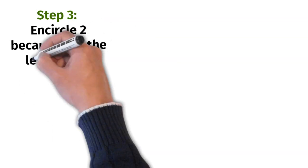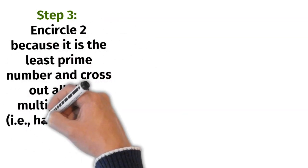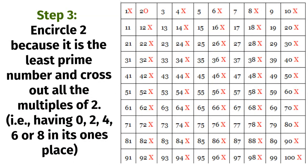Step 3: encircle 2 because it is the least prime number and cross out all the multiples of 2, that is having 0, 2, 4, 6, 8 in its one's place.